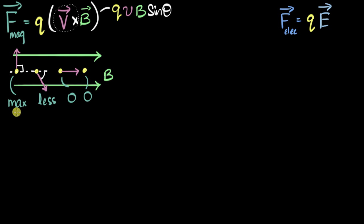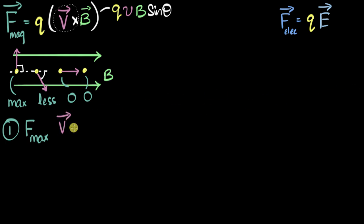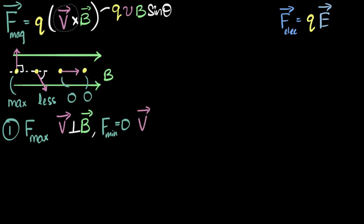So the magnetic force is maximum when the velocity is perpendicular to the magnetic field. The force is a minimum — which is zero — when either the velocity is zero or the velocity is parallel to the magnetic field.